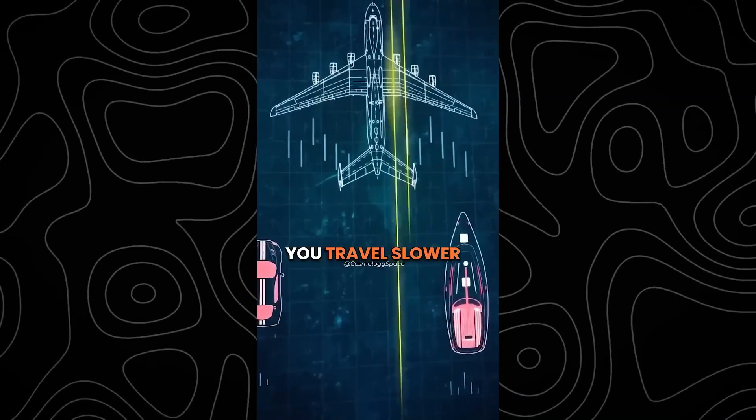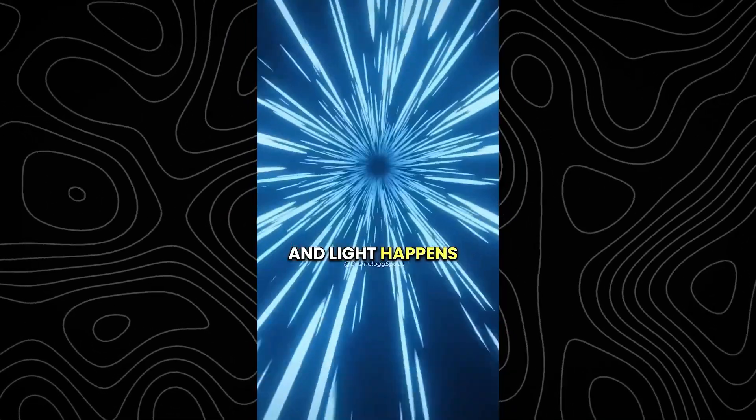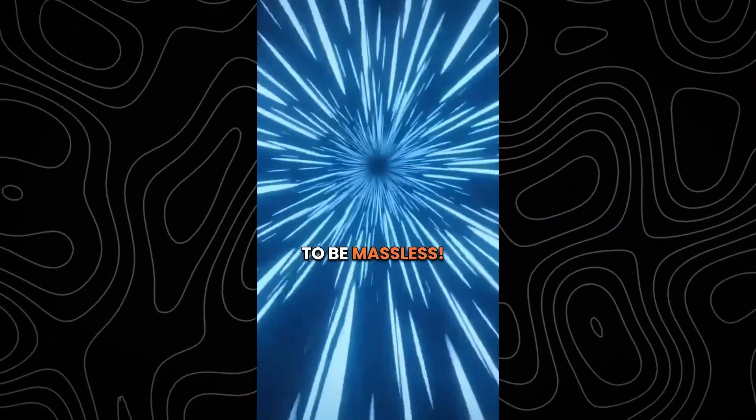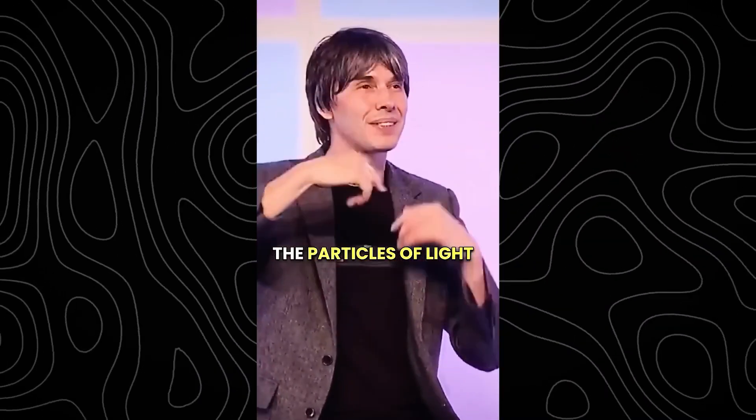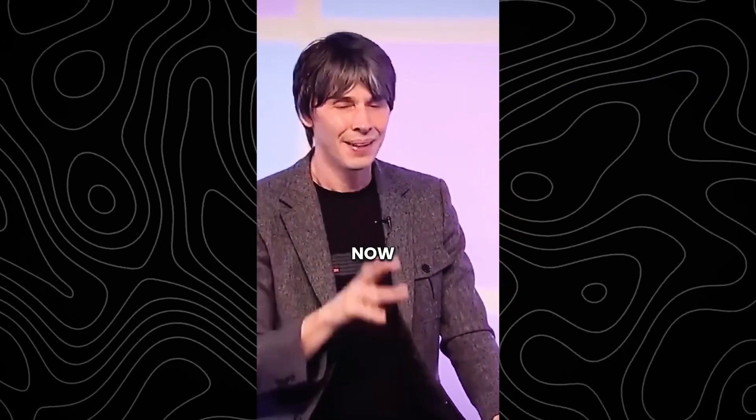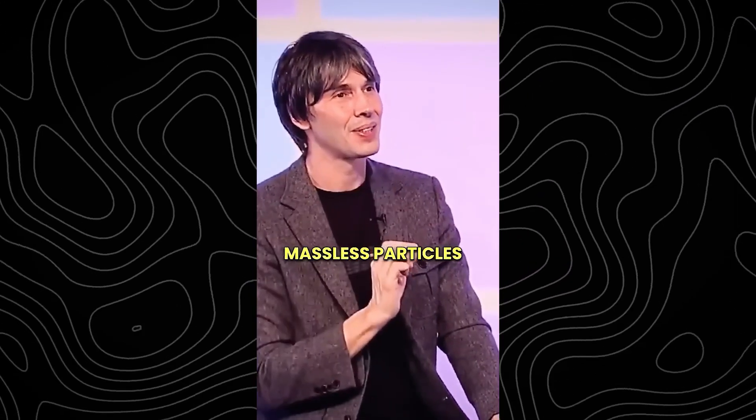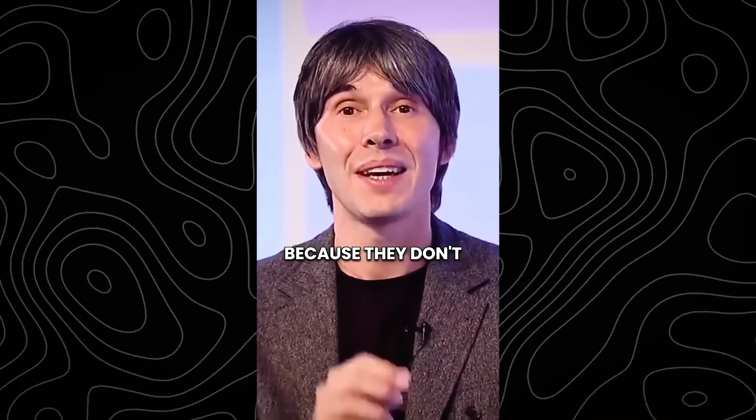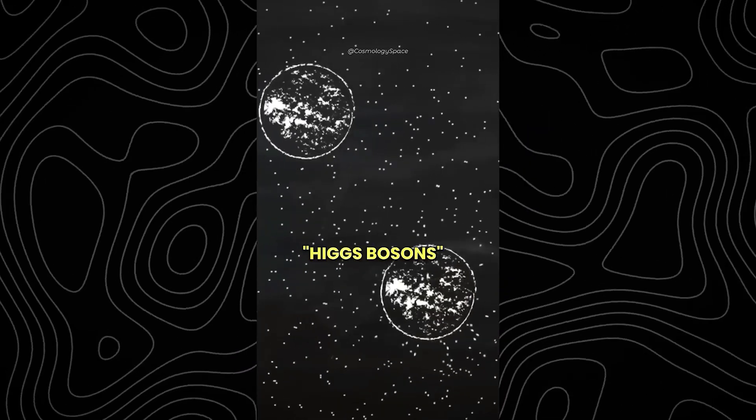And if you have mass, you travel slower than the speed of light. Light happens to be massless. So the photons, the particles of light streaming around in the room now, are massless particles. Why are they massless? Because they don't interact with something called Higgs bosons.